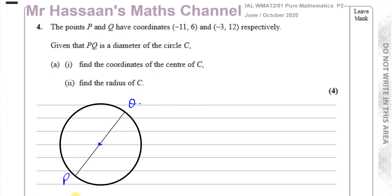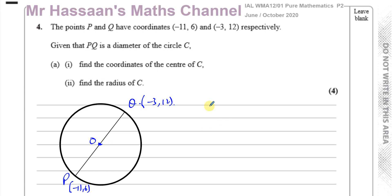P has coordinates minus 11, 6 and Q has coordinates minus 3 and 12, and it's the diameter. So we've got to find the coordinates of the center — let's call it O, the center of the circle. The center of the circle is the midpoint of the diameter, so we need to find the midpoint of the diameter.